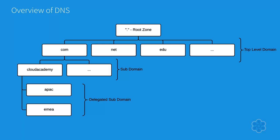So in our example, the root is the uppermost part of the DNS hierarchy, and in this case the top-level domain is the last segment, .com, and cloudacademy represents a subdomain of com. And if it was apac.cloudacademy.com, then apac would be a subdomain of cloudacademy, and so on.